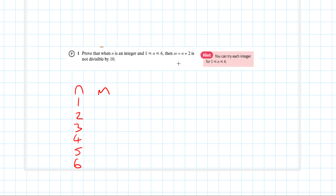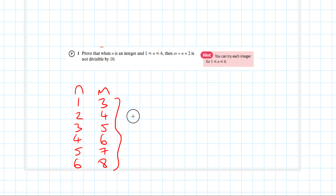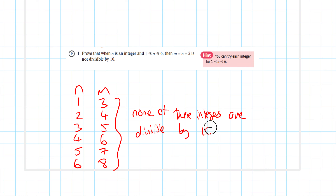We're given that the expression is n times n plus 2. So 1×3=3, 2×4=4, 3×5=5, 4×6=6, 5×7=7, and 6×8=8. We can see that none of these integers are divisible by 10, so therefore we have proven the statement.